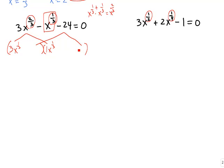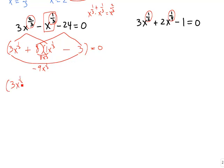In the back we need two numbers that multiply to −24 and, combined with the 3, give a middle term of −1. Trying 8 and 3: 3 times 3 gives 9x^(1/3) and 8 times x^(1/3) gives 8x^(1/3). Since 9 and 8 differ by 1, making the 9 negative (so that 3 gets a minus) and the 8 positive gives −9x^(1/3) + 8x^(1/3) = −x^(1/3). So it factors as (3x^(1/3) − 8)(x^(1/3) + 3) = 0.